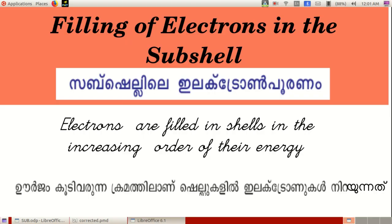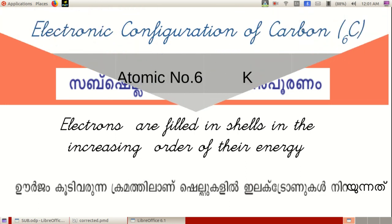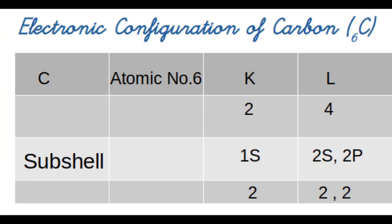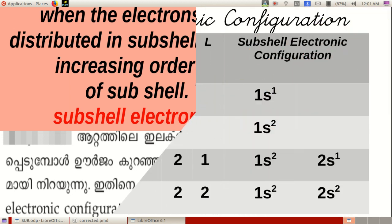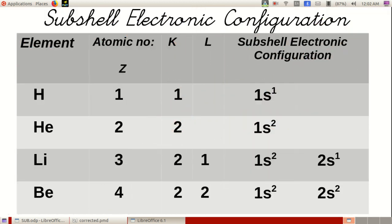In the last class we studied about the subshells. Electrons are filled in shells in the increasing order of their energy. The electronic configuration of carbon is 2-4: the first two electrons are filled in the K-shell, which has the lowest energy, and the remaining four electrons are filled in the L-shell, which has higher energy. When the electrons in an atom are distributed in subshells, they are filled in the increasing order of the energies of subshells. This is called a subshell electronic configuration. The number of electrons in an atom is equal to its atomic number.